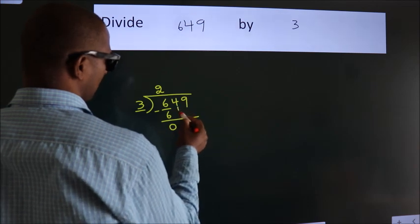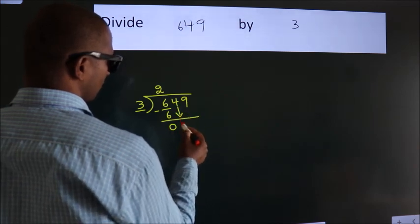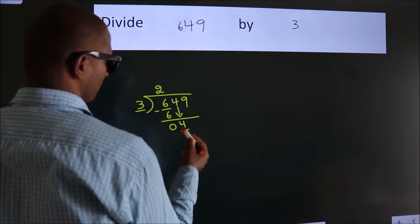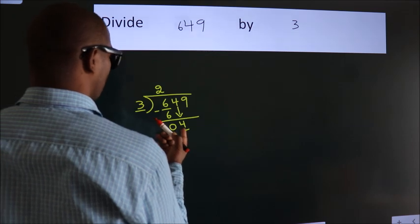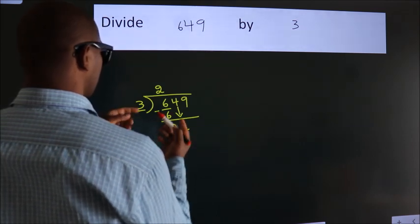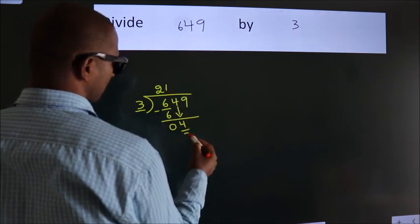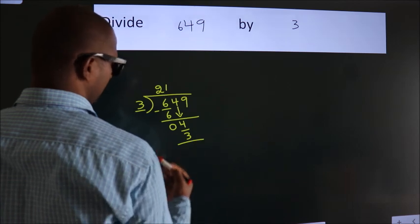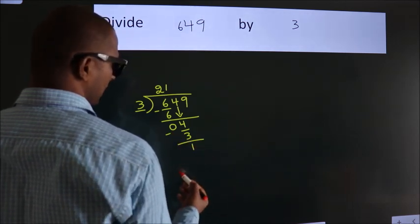After this, bring down the beside number. So 4 down. A number close to 4 in 3 table is 3 times 1, 3. Now we subtract. We get 1.